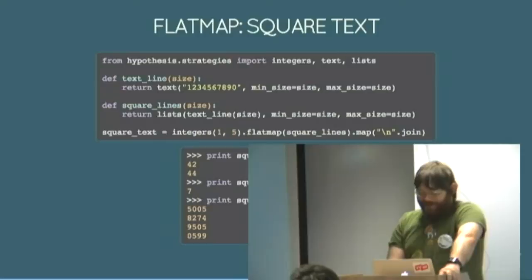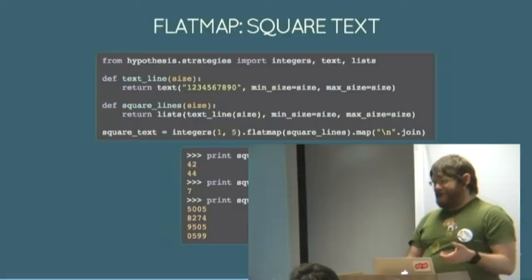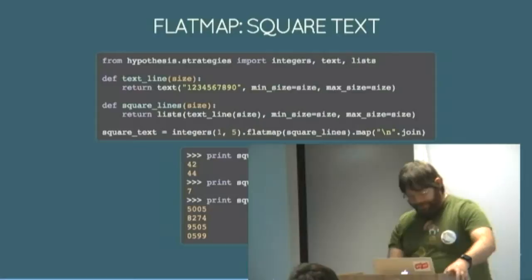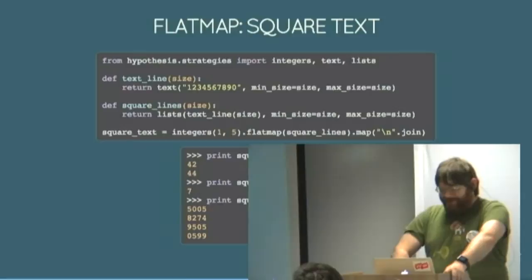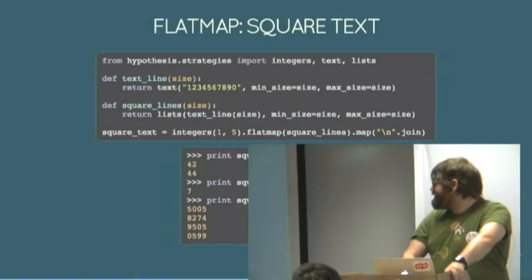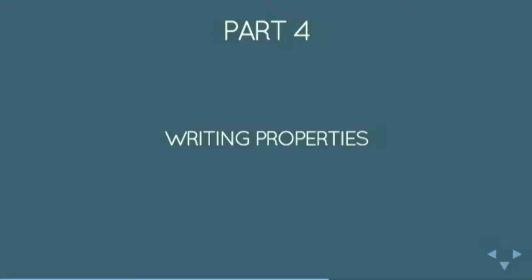So if you want to generate powers of two you start with an integer and then you map that through a function which is two to the power of that integer and you get powers of two. More complicated things. So I want to give my code some square text. A block of text with n lines and n columns. This uses flat map which takes an example value and uses that to build another strategy which it then generates your actual value from. And you can also generate recursive data. So if you want a nested dictionary full of dictionaries and strings and nones, you can generate that as well.